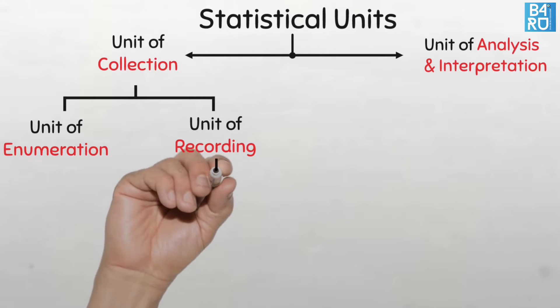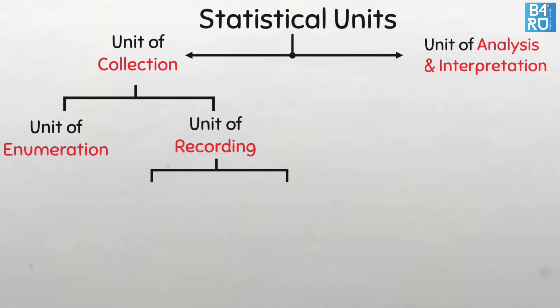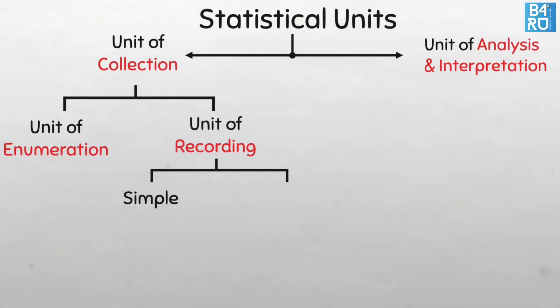The unit of recording can further be divided into simple or composite units, depending on whether one or more measurements are involved. When it only involves one measurement, it is said to be simple, and when it's more than one, it is said to be composite.